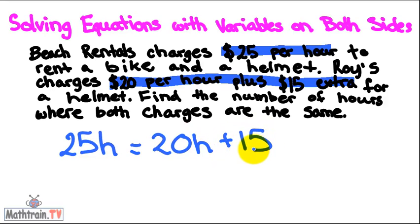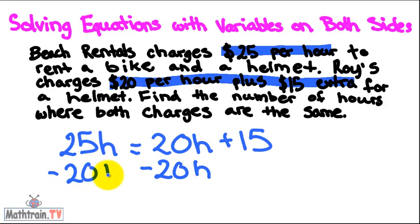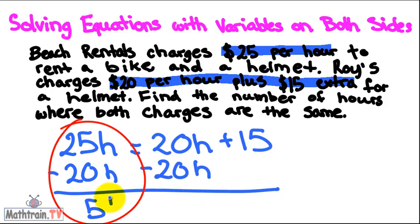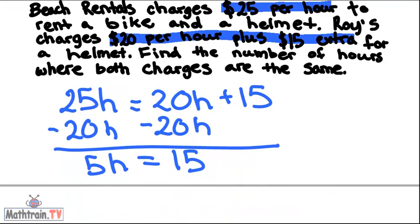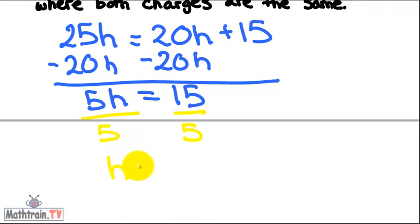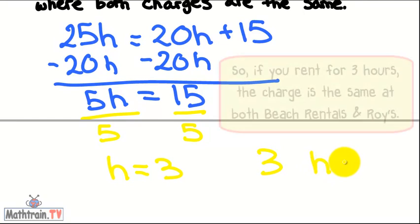So what we want to do is get all the h's on the same side. So we'll subtract $20h from both sides, which is the inverse. And now we divide both sides by 5 because division is the inverse of multiplication. And then you get h equals 3. So 3 hours is your answer.